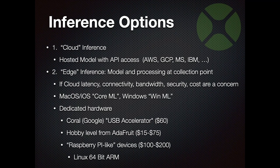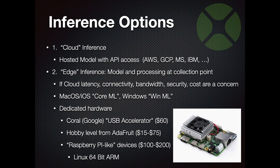There's also dedicated hardware - the USB accelerator I had on the Raspberry Pi, which gives it the horsepower to do analysis. That's about $60 with a $40 Raspberry Pi - a cheap option. Adafruit, SparkFun, and similar companies sell things between $15 and $75 that will do edge inferences. Then there are Raspberry Pi-like devices ranging from $100 to $200 that run 64-bit Linux ARM. Here's a picture of one I have - it looks very much like a Raspberry Pi except for the massive heat sink, fan, HDMI, USB, audio in and out, and the same general-purpose IO pins.